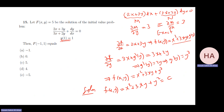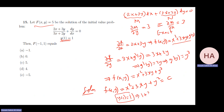Applying the initial condition: y(1)=1 means f(1,1) = 1+3+1 = 5, so C=5. The solution is x²+3xy+y² = 5. To find f(-1,1): plug in x=-1, y=1 to get 1-3+1 = -1.